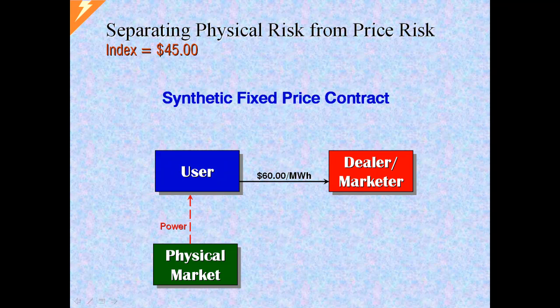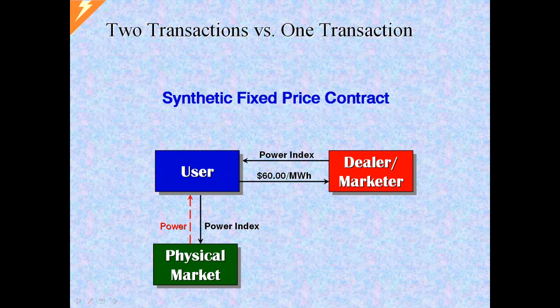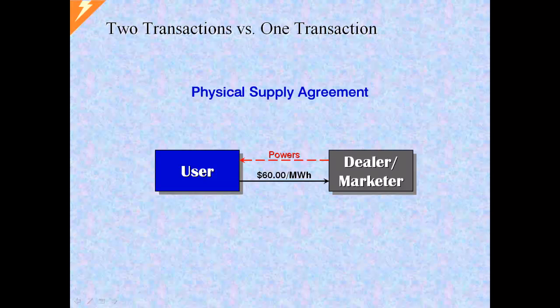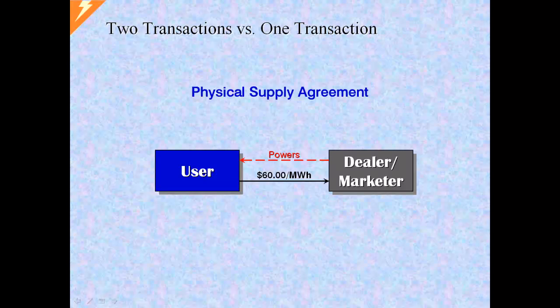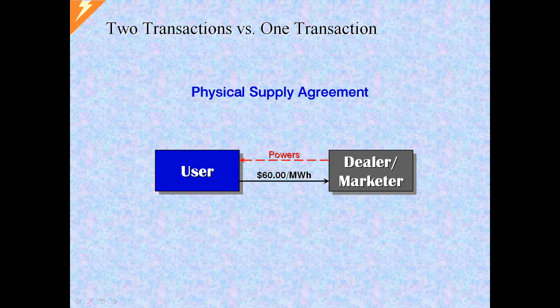But now the question that arises is, why execute two transactions to get fixed price supply when only one is needed? The answer is, there are a number of reasons why doing two may be better than doing only one.